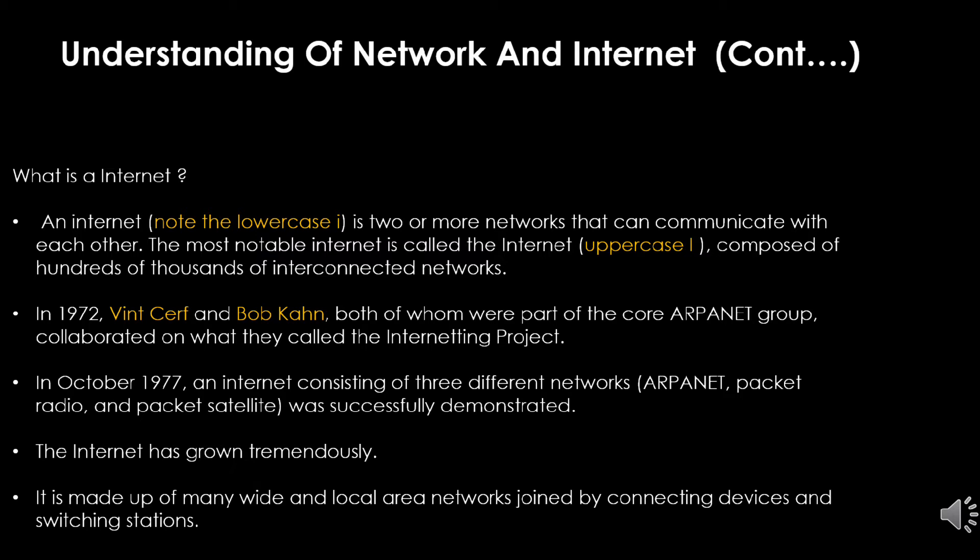This is when the internet came into the game. An internet is two or more networks that can communicate with each other. Suppose you have a Bluetooth network and a radio network — if you are able to communicate between these two networks, then you can say it is an internet. The internet is composed of hundreds and thousands of interconnected networks. In 1972, Vinton Cerf and Bob Kahn, both members of the core ARPANET group, collaborated on a project called the Interneting Project.